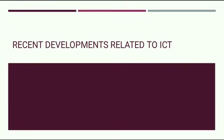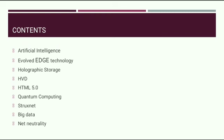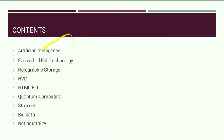Hello friends, I'm Rashmi Sharma. In this video we are going to start with the final chapter of ICT, that is recent developments related to ICT. The contents given in IES 2019 for chapter 6 include artificial intelligence, evolved technology, holographic storage, HPD, HTML 5.0, quantum computing, StructsNet, big data, and net neutrality. I will make sure the basic ideas behind all these concepts will be made clear in these videos.